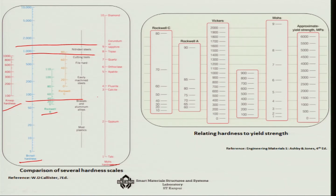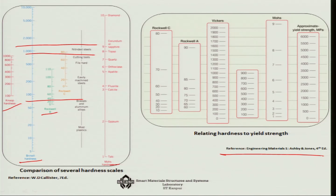The formulation used for calculation of yield strength from hardness, as given in the Ashby and Jones book, allows you to get the yield strength directly. For example, a hardness value of 1200 corresponds to a yield strength of something like 4000 MPa. Corresponding to each hardness value, you can get an approximate yield strength.